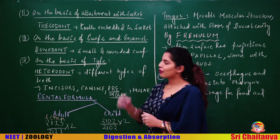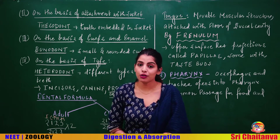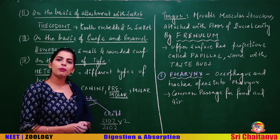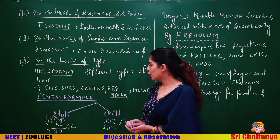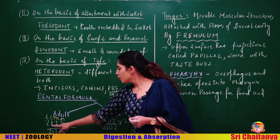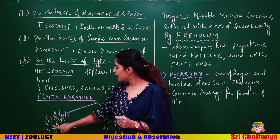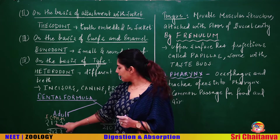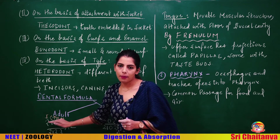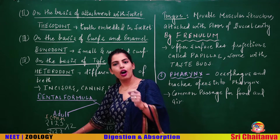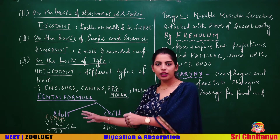The dental formula, which is also asked in NEET, differs between adults and children. The adult dental formula is 2, 1, 2, 3 / 2, 1, 2, 3 — where the numbers stand for incisors, canine, premolars, and molars. The top row is upper jaw half, the bottom is lower jaw half; multiply by two to get the total number of teeth.